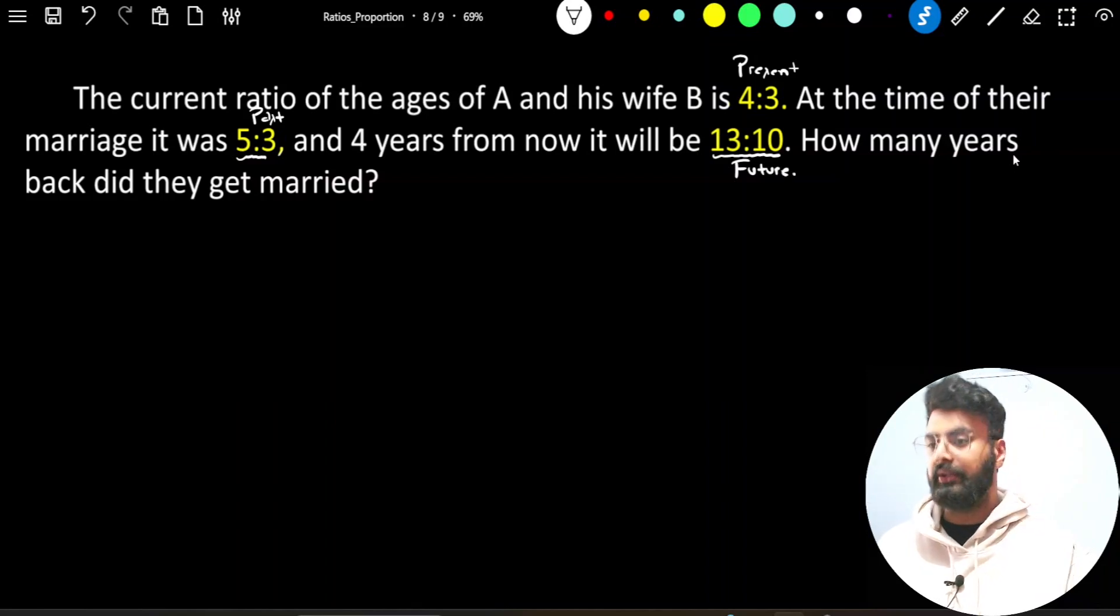What I am trying to tell you, when we write these three ratios, we will maintain a chronological order. First, we have to maintain a table for A and his wife B, where we will write these three ratios in chronological order.